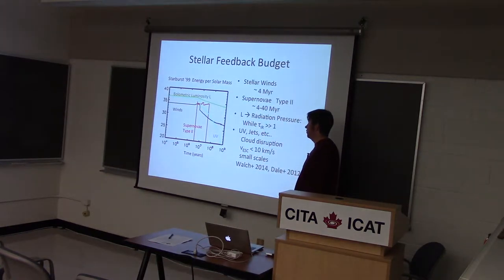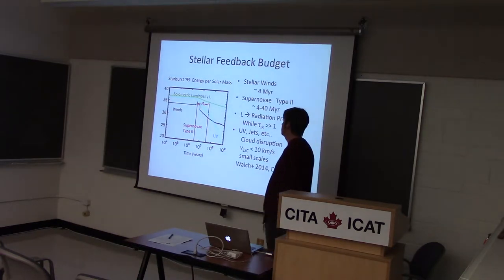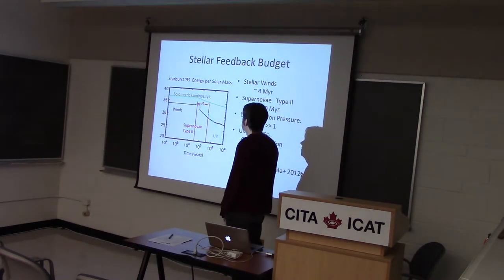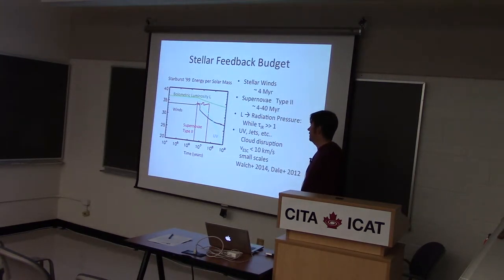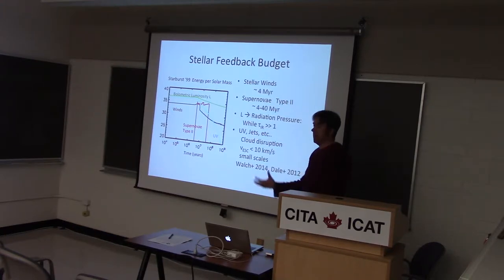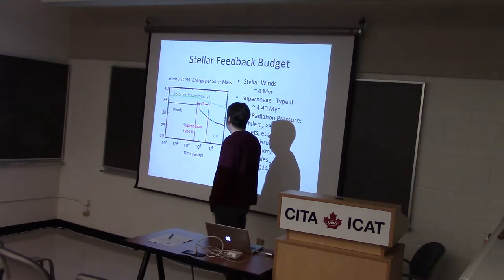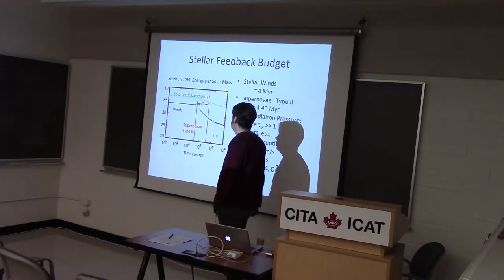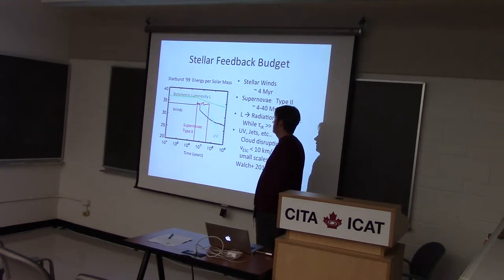In terms of the budget we have to work with, if we're looking at stars, the place that everyone goes is Starburst99, Leitherer et al. 1999 and follow-ons. Per solar mass you have roughly this much energy, assuming a pretty standard Salpeter IMF at the high mass end, which is all that really matters for feedback. Our sources are as follows: we have Type 2 supernovae, which is a pretty robust source of energy regardless of complicating factors like metallicity.